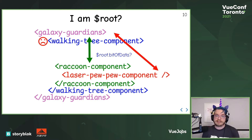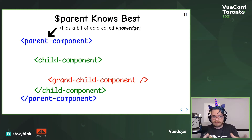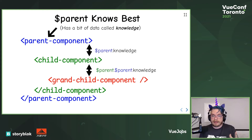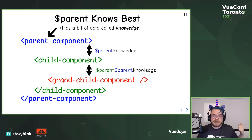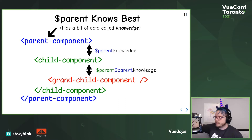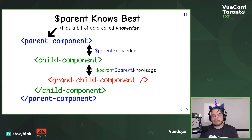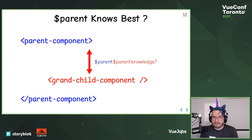Another option similar to this is $parent. Maybe we have components that all rely on each other. With $parent, a child component can access $parent.knowledge, and the grandchild can do $parent.$parent.knowledge. This gets us more localized state that doesn't have to be globally accessible. The problem is it's brittle — if someone uses the parent component and grandchild component without the child component, it breaks because the grandchild is now looking up to the wrong parent.